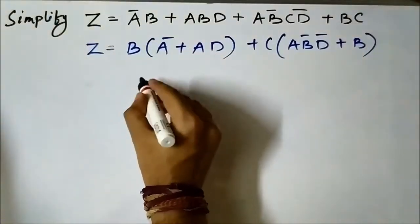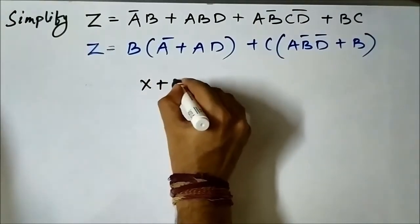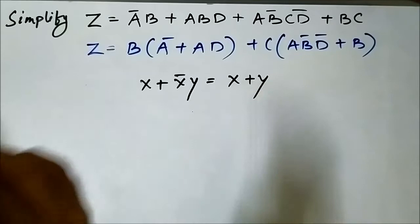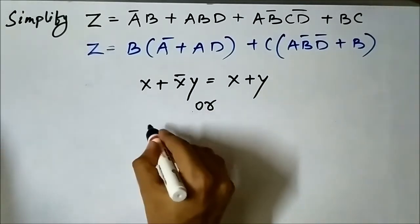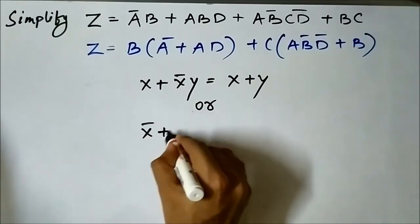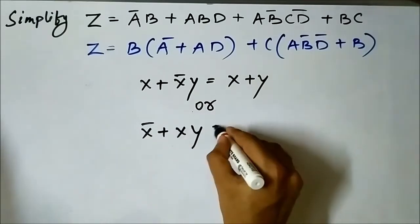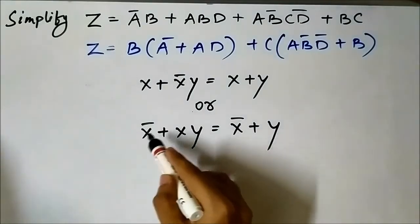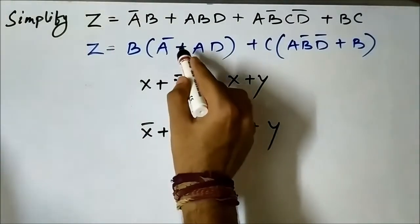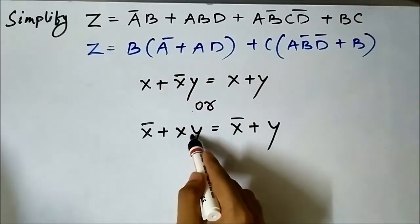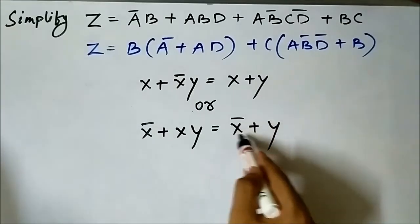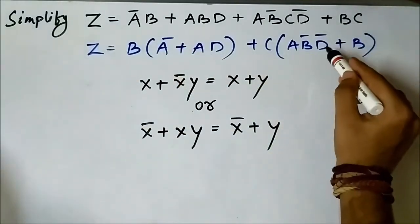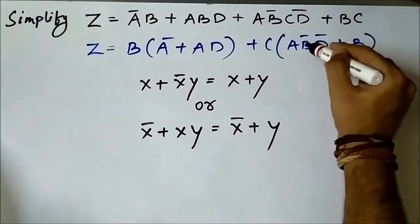The Boolean algebra rule that comes into play here is: x + x̄·y = x + y, or the modified version x̄ + x·y = x̄ + y. This version is applicable to ā + a·d (matching x̄ + x·y). Applying the rule, ā + a·d simplifies to ā + d.